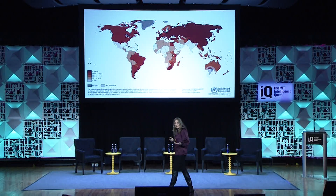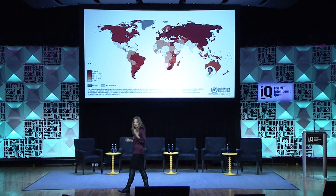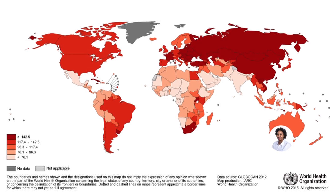I want to close my talk by showing this map — this time not of women, but men. It's a mortality map across the world, where red means more mortality. I firmly believe that with all our strengths in machine learning and biology — at the Koch Institute, the Broad Institute, and through our connections to local hospitals — we really have a chance to wipe red from this map. Thank you.